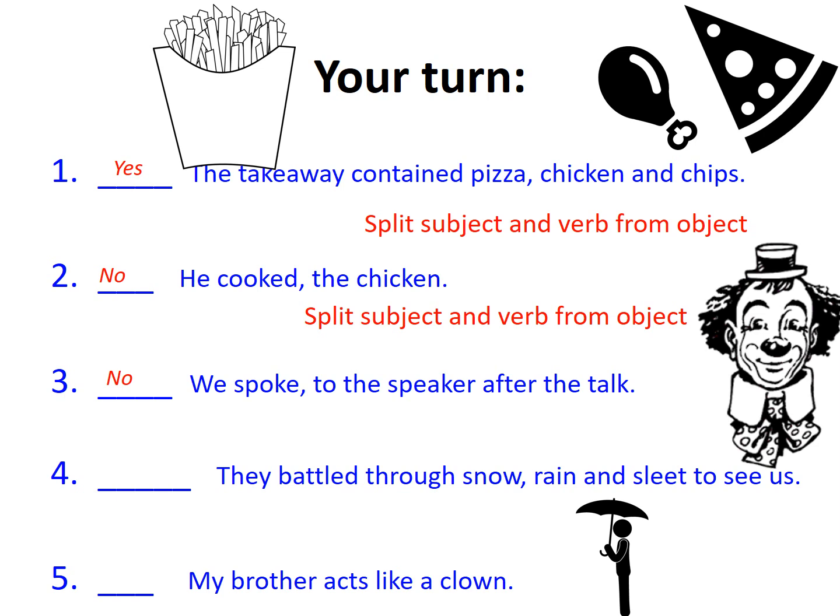'They battled through snow, rain and sleet to see us.' They must be very good friends and family to do that. We know who 'they' are — they are our subject and the verb 'battled' is beside it. We then just find out the conditions with which these people battled: through the rain, the snow and the sleet. The comma between snow and rain is significant — it's listing.